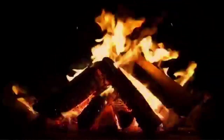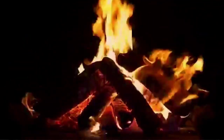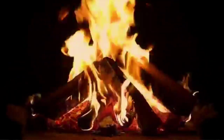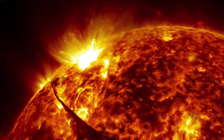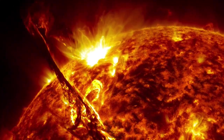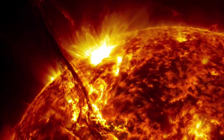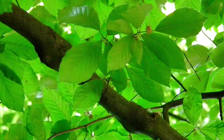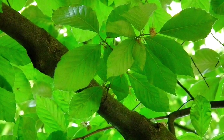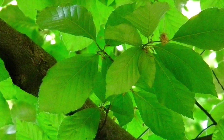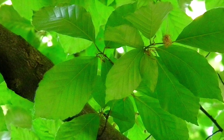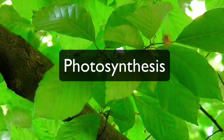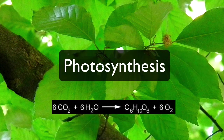Where did the wood get its energy from? The answer is from a huge concentration of energy we call the sun. Sunlight radiating away from the sun reaches the green leaves of the tree here on Earth. And within those leaves, through a process called photosynthesis, the sun's energy is stored in the form of carbohydrates, which the tree uses to make the wood.